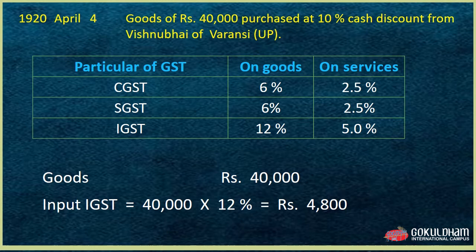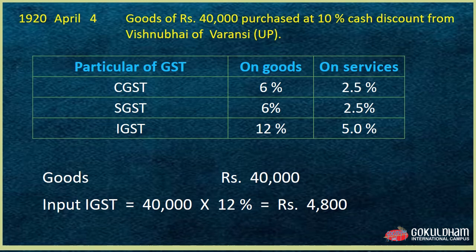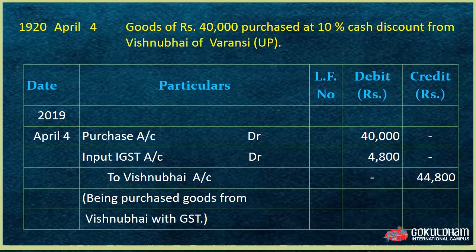Next transaction: Goods of ₹40,000 purchased at 10% trade discount from Vishnubai of Varanasi, Uttar Pradesh. Since Vishnubai is outside Gujarat, this is an inter-state transaction, so we apply IGST at 12%. IGST = ₹40,000 × 12% = ₹4,800. Journal entry: Purchase Account debit ₹40,000, Input IGST Account debit ₹4,800, To Vishnubai Account ₹44,800. Narration: Goods purchased from Vishnubai with GST.